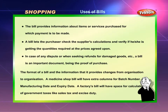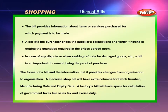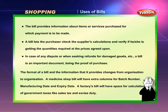The format of a bill and the information that it provides changes from organization to organization. A medicine shop bill will have extra columns for batch number, manufacturing date and expiry date. A factory's bill will have space for calculation of government taxes like sales tax and excise duty.